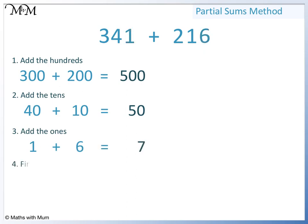Finally we find the total. 500 plus 50 plus 7 equals 557. So 341 plus 216 equals 557.